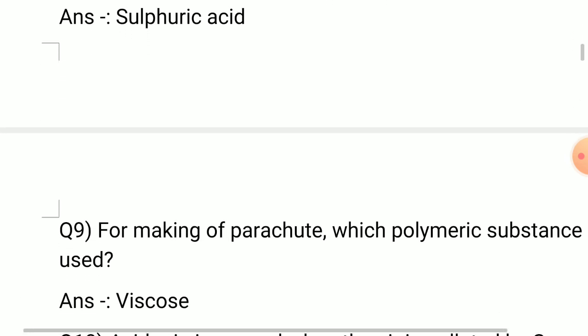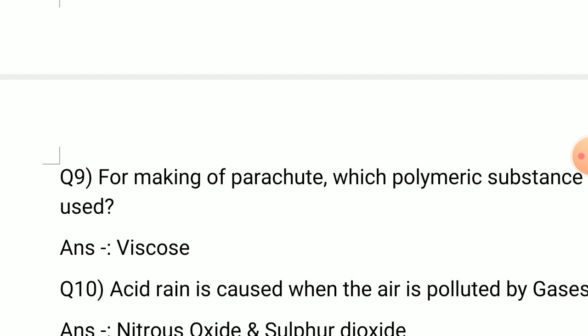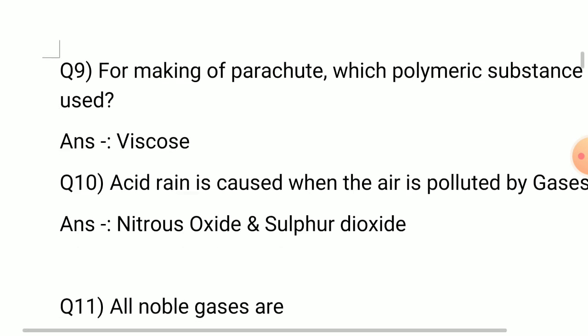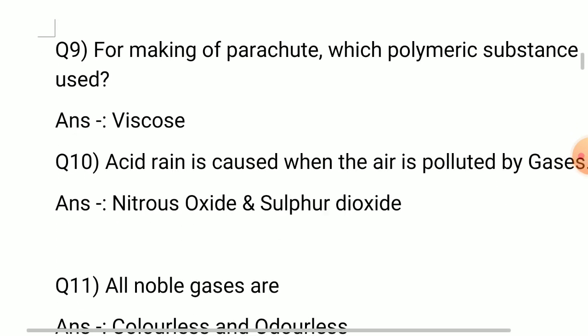Question number 9: For making of parachutes, which polymeric substance is used? Answer: Viscose. Question number 10: Acid rain is caused when the air is polluted by which gases?